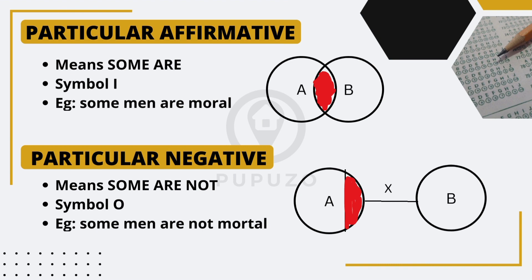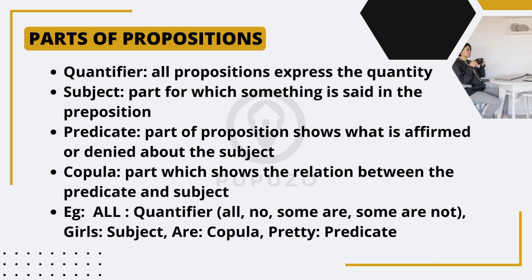Now, let's examine the different parts that make up propositions. Every proposition consists of four key elements that help convey its meaning. The first part is the quantifier, which expresses the quantity or extent of the proposition. It signifies whether the proposition refers to all, no, some are, or some are not.